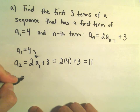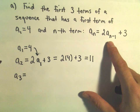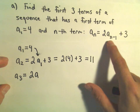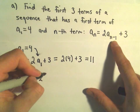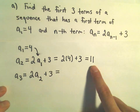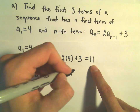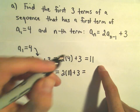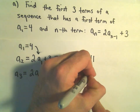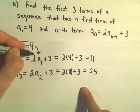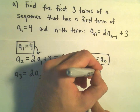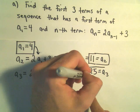Likewise, if we want to figure out our third term using our formula, it says the third term is going to be 2 times a sub n minus 1. If n is 3, then n minus 1 is 2, plus 3. We know our a sub 2 value is 11, so we get 2 times 11 plus 3. Well, 2 times 11 is 22, and 22 plus 3 will be 25. So now we've got our first three terms: a sub 1 is given as 4, a sub 2 equals 11, and a sub 3 equals 25.